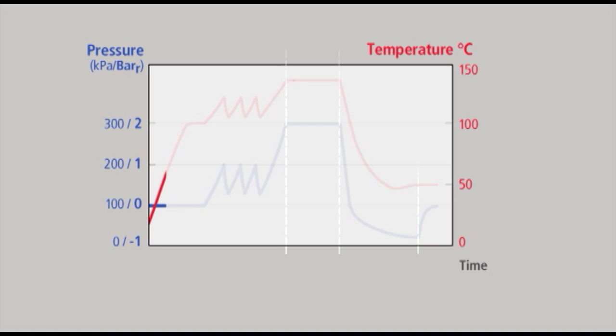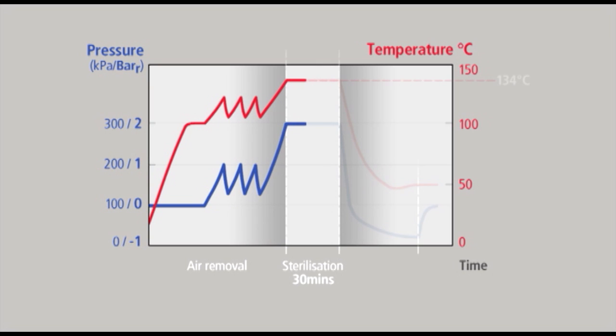The system works by first heating water to produce steam. Air removal from the chamber and load is carried out by three pulses of steam. Sterilisation of general hospital loads takes 30 minutes at 134 degrees Celsius. This is followed by a drying phase by vacuum for 30 minutes.